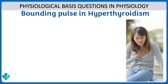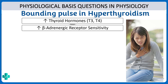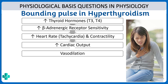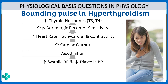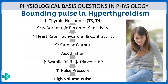Next, why is there a bounding pulse in hyperthyroidism? Whenever thyroid hormone is elevated it increases the sensitivity to beta-adrenergic receptors, which causes increased heart rate and increased cardiac output. Along with that we also have vasodilation, which means systolic blood pressure increases but diastolic blood pressure decreases, giving an increased pulse pressure — causing a high volume pulse. That is why we have a bounding pulse in hyperthyroidism.